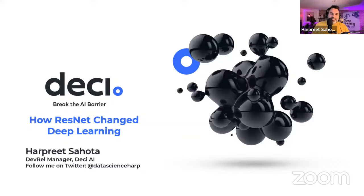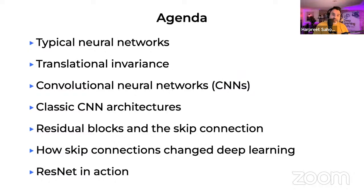My name is Harpreet Sahota, I'm the DevRel Manager at DESE. We're going to be talking about how ResNet changed deep learning. If you're on Twitter, please follow me at Data Science Harp — I share fundamentals of deep learning and basics of machine learning content there every day. The rest of the presentation covers: typical neural networks, translation invariance, convolutional neural networks, classical CNN architectures, then ResNet, the residual block and skip connections, and how these inventions changed deep learning forever. Then we'll see it in action with a coding example.